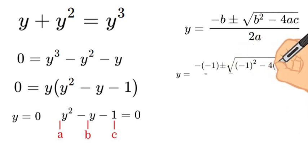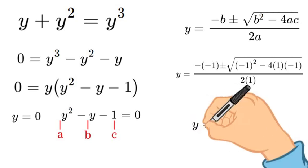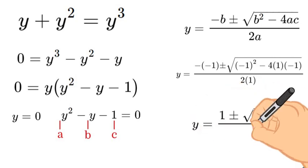If we go ahead and plug all those numbers in, that is what we will get. Now it looks like a lot, but once we simplify that down, it is simply y equals 1 plus or minus square root of 5 over 2.